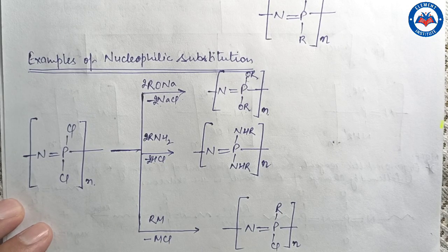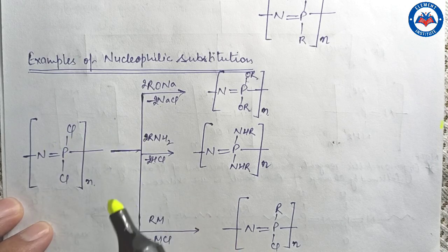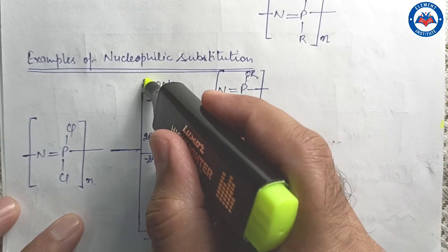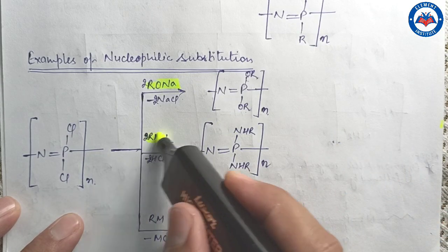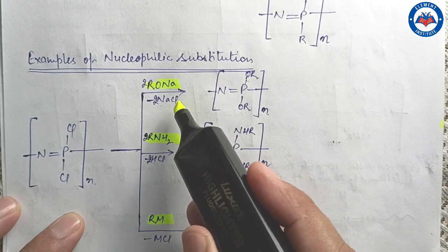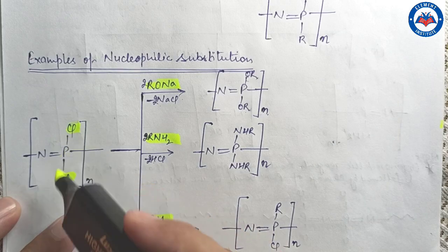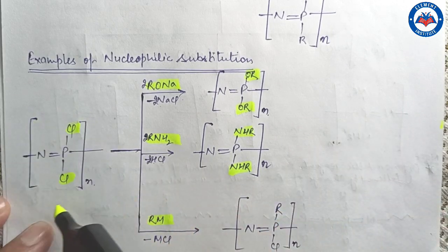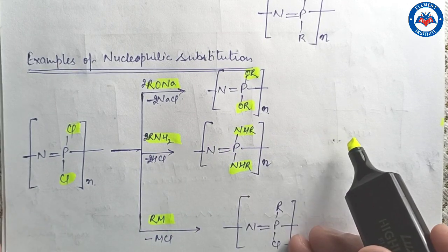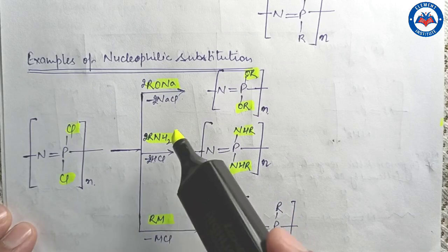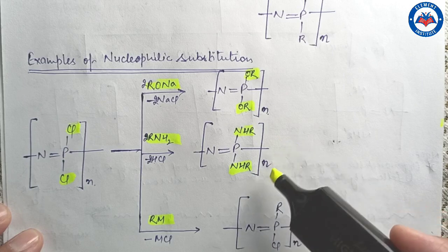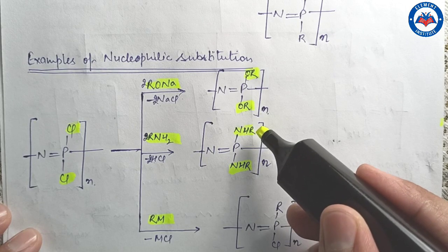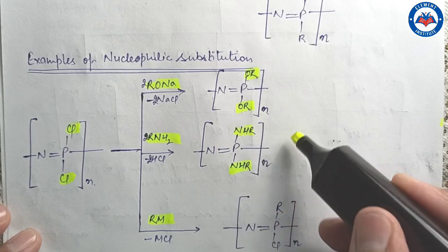Important nucleophilic substitutions of polydichlorophosphazene include treatment with sodium salts of alcohols or phenols, or with primary amines or organometallic reagents, leading to replacement of one or both halogens with alkoxy or amine groups. The reaction with amines is known as ammonolysis. This ammonolysis can produce various molecules where the R group may be methyl, ethyl, butyl, or even aromatic groups.